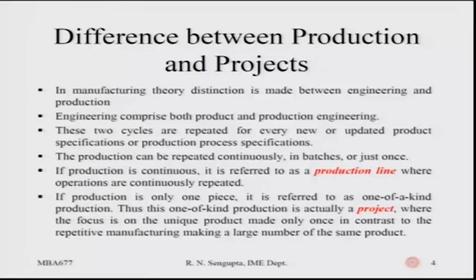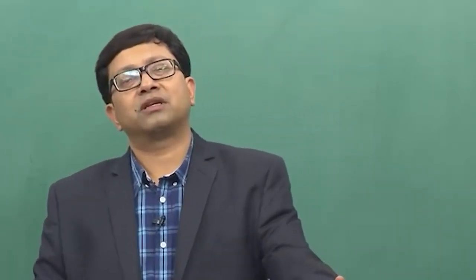If production is only one piece it is referred to as one-of-a-kind production — and that, done only once, is basically a project where the focus is on unique product design and unique production concepts used to implement it. This can also apply outside manufacturing — for example, a project for implementing a marketing strategy, coming up with a new drug that is one of its kind, or finding out the efficacy of a drug in the market and planning your strategy accordingly. Since it is only done one time, it is termed a project on a project management scale.